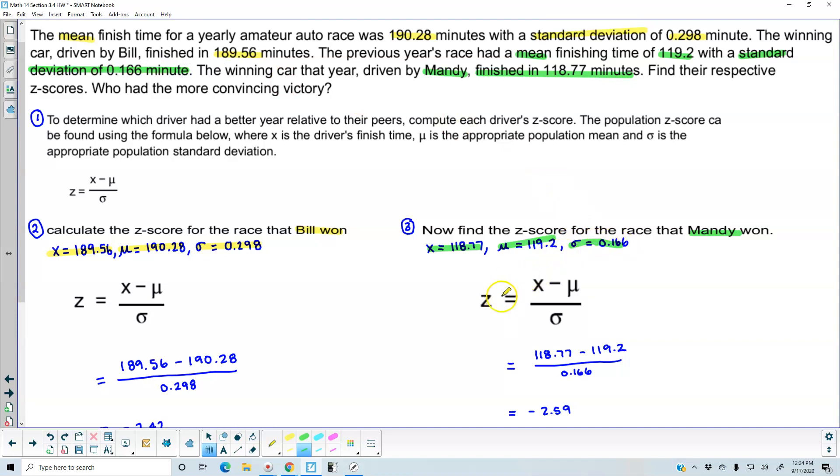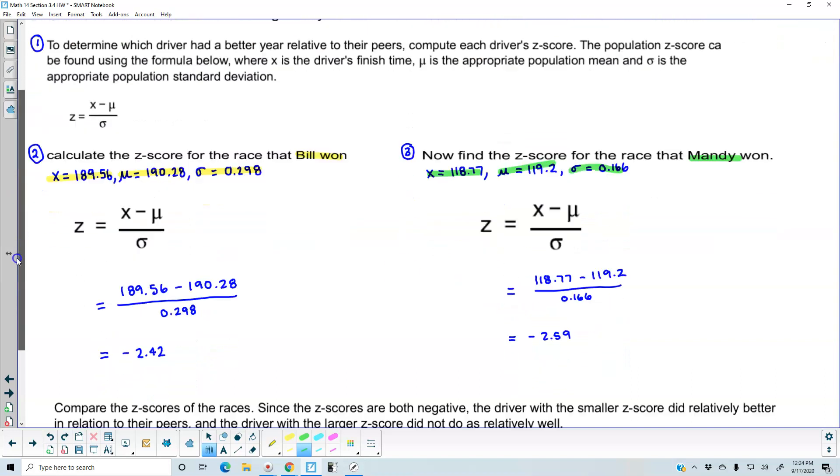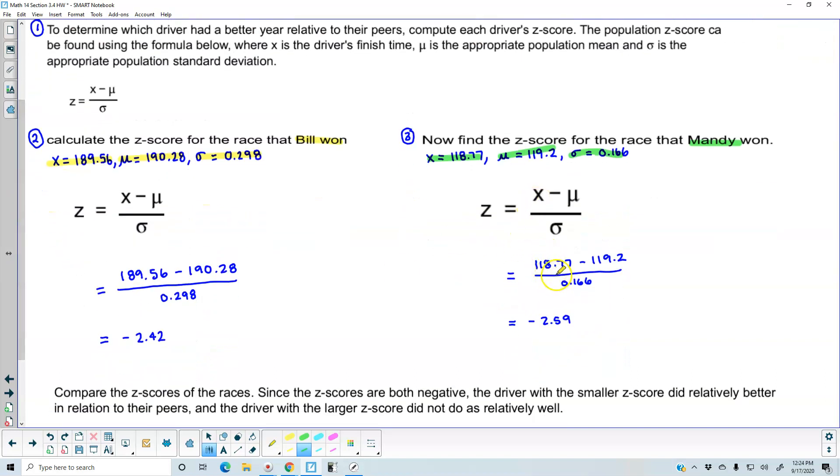So now that we have that information, we're going to plug it into our z-score formula. So the data value of 118.77 minus the population mean 119.2, divided by the population standard deviation of 0.166, gives us a z-score of negative 2.59.